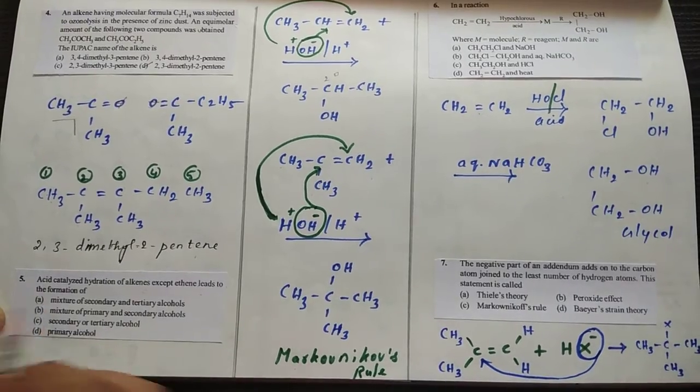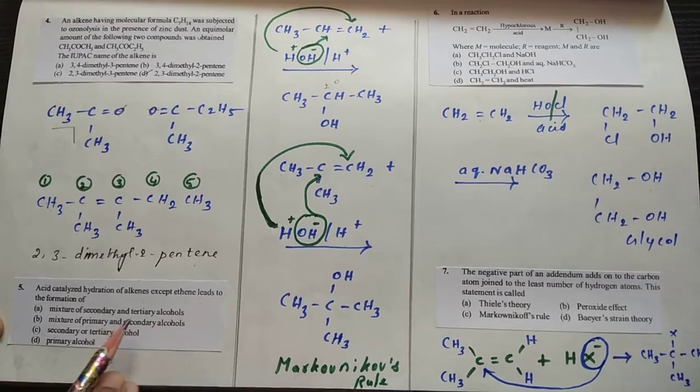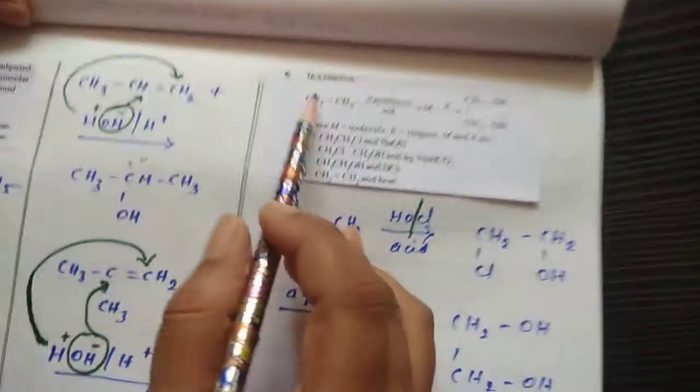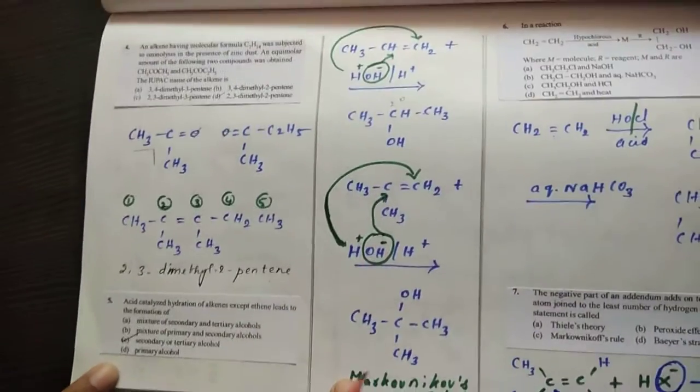Either secondary or tertiary alcohols are obtained when the alkene undergoes hydration. Then the next question, the sixth question: in a reaction with hypochlorous acid. The answer involves secondary or tertiary alcohol.